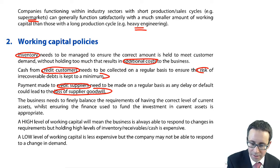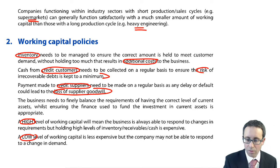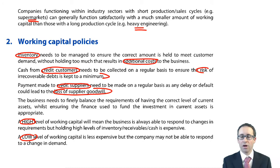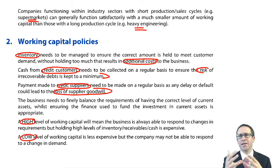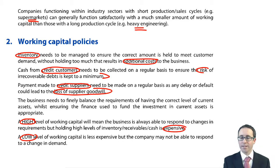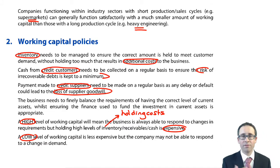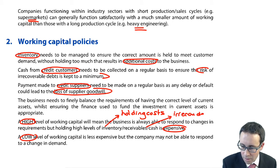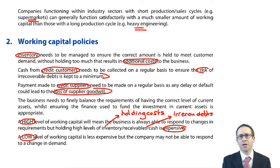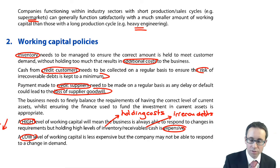What you need to decide is whether you're going to have a high or a low level of working capital. A high level means lots of inventory, lots of receivables, and plenty of cash. That means you can be quite flexible in terms of changes in the business environment. But the problem is that it can be quite expensive: on your inventory you'll have lots of holding costs; if you're holding lots of receivables, there's a risk of irrecoverable debts; and if you've got cash sitting in the business, it's not generating any interest, which reduces profitability. So high levels of working capital tend to lead to reduced profitability.